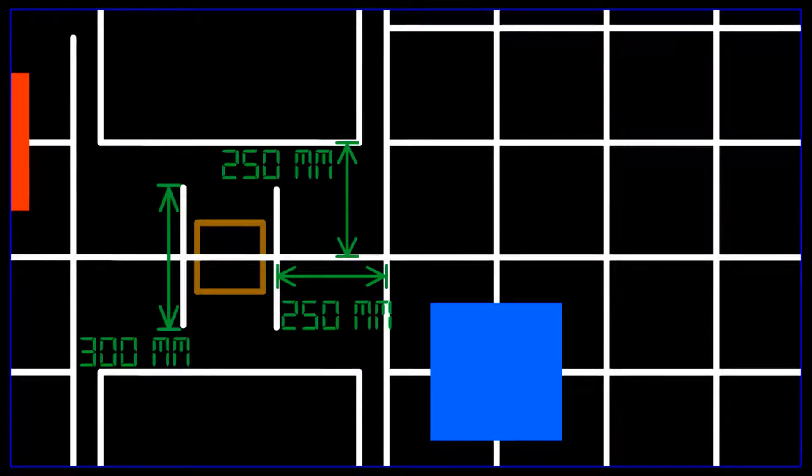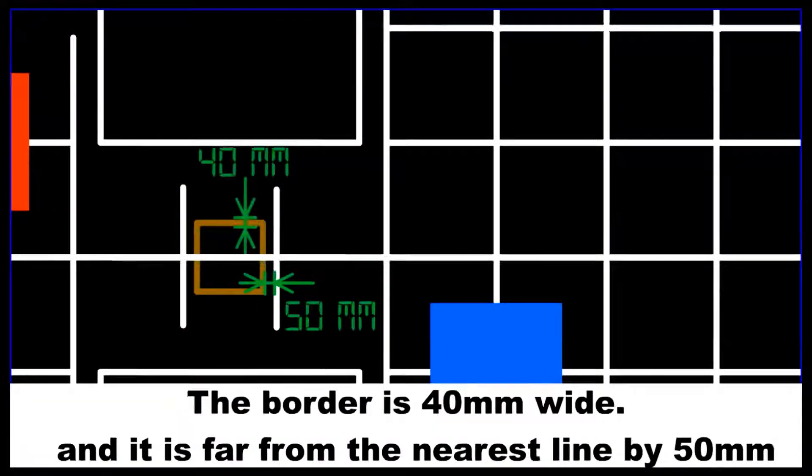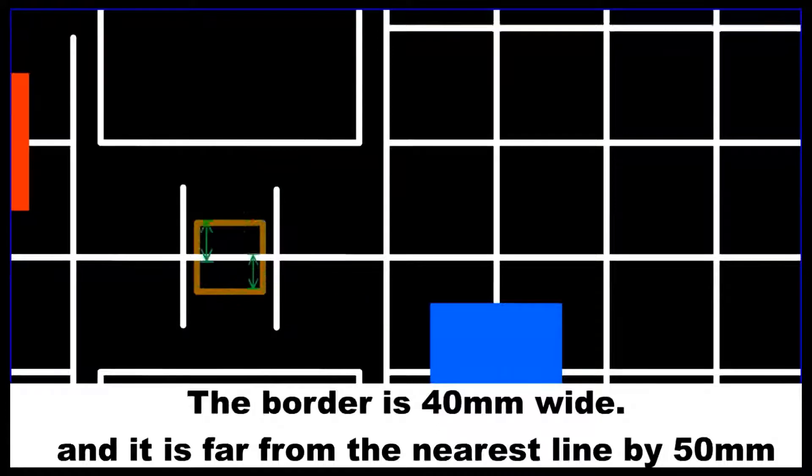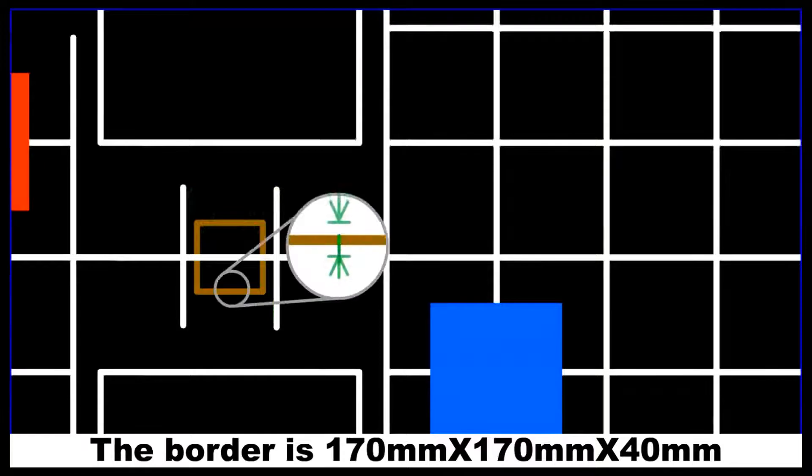The dimensions of the common zone are as shown. The border is 40 mm wide and is far from the nearest line by 50 mm. The border is 170 mm by 170 mm by 40 mm.